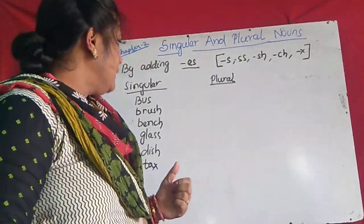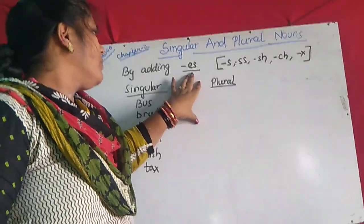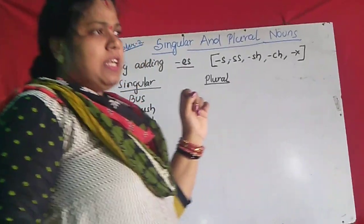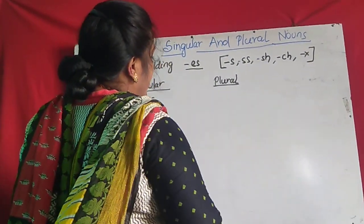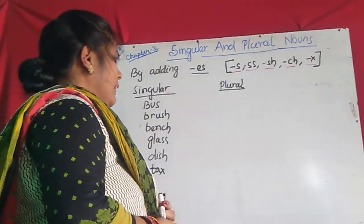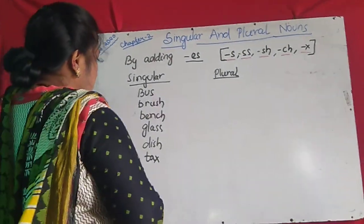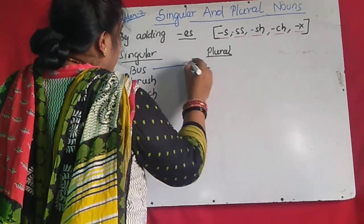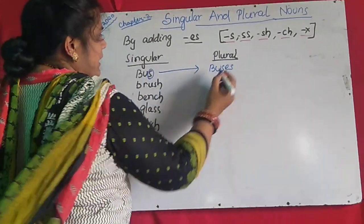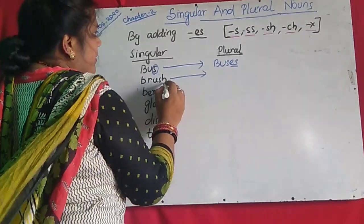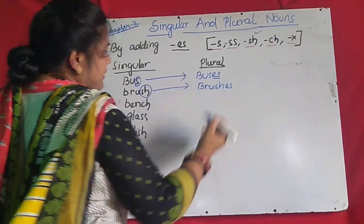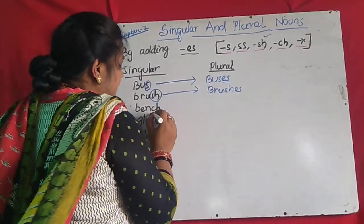The second rule is adding ES. Where do you add ES? The words that end with S, SS, SH, CH, or X — if the words are ending with S, SS, SH, CH, or X, then the plural will be formed by adding ES.